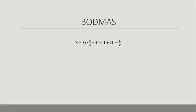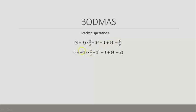First we'll do the brackets. You can see there are two brackets here. In the bracket operations, 4 divided by 2 has been turned into a 2. Why did we do the division first inside the bracket? That's because of BODMAS, where division comes before addition and subtraction.